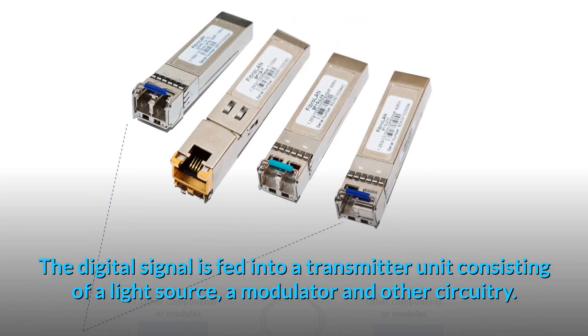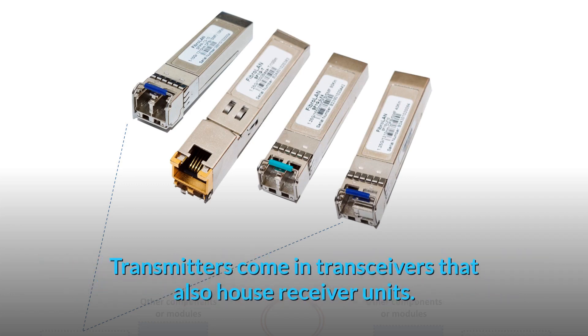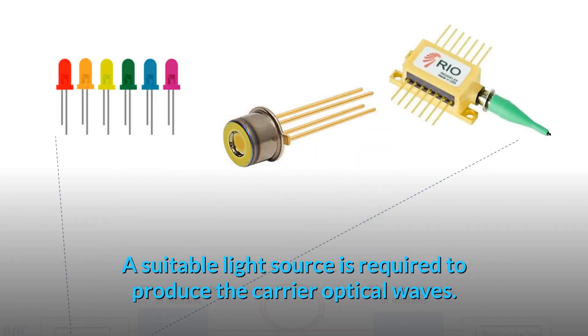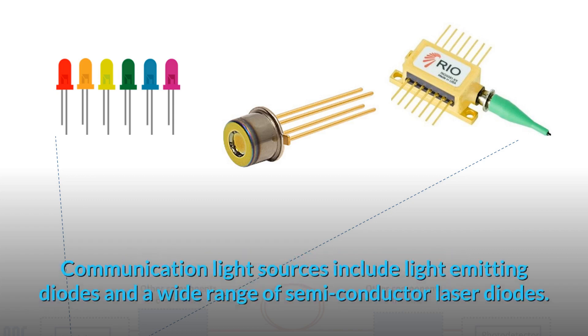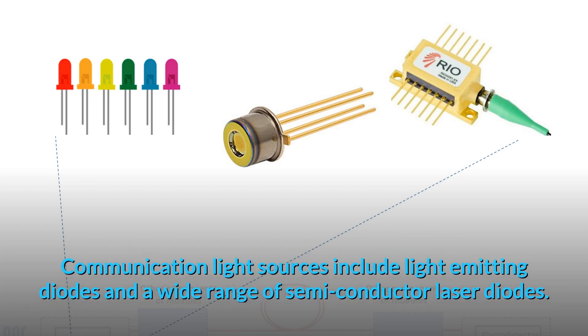The digital signal is fed into a transmitter unit consisting of a light source, a modulator, and other circuitry. Transmitters come in transceivers that also house receiver units. A suitable light source is required to produce the carrier optical waves. Communication light sources include light-emitting diodes and a wide range of semiconductor laser diodes.